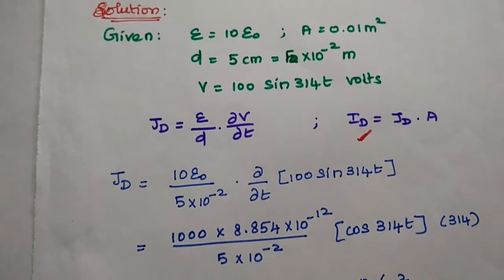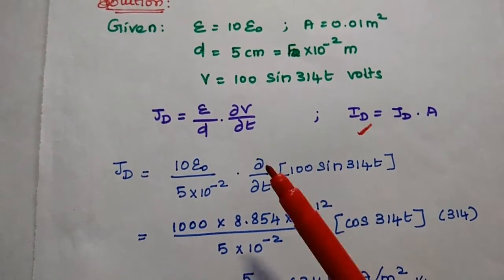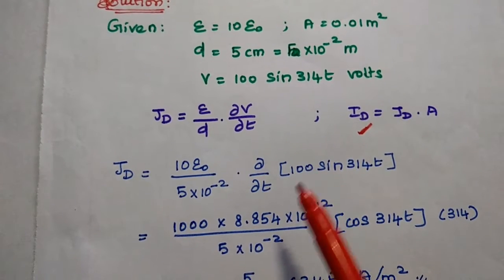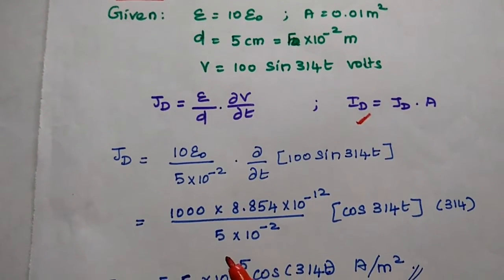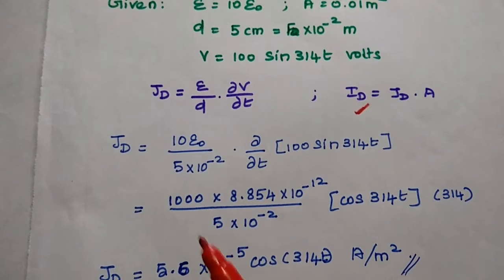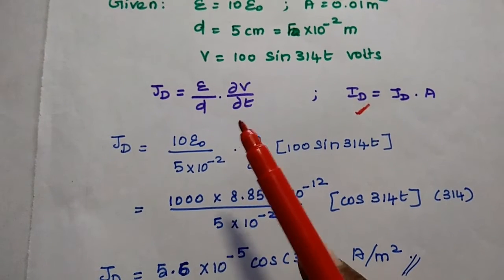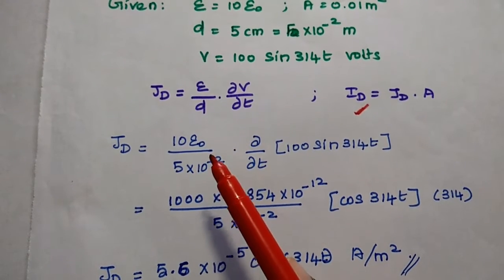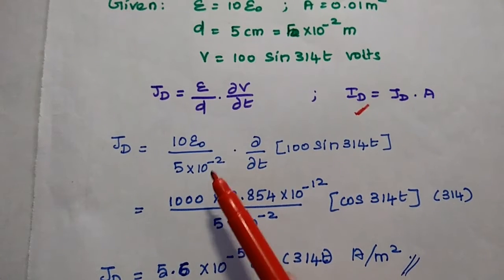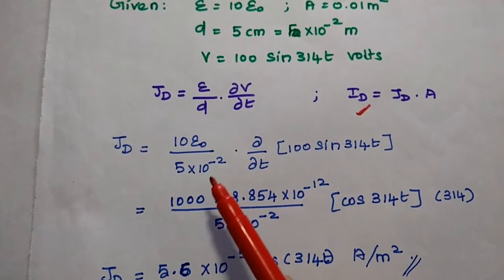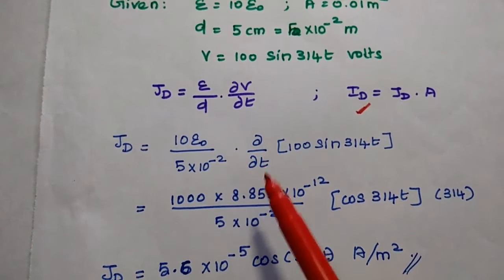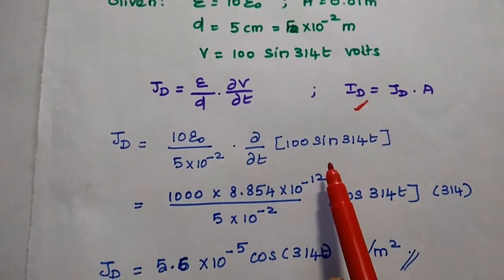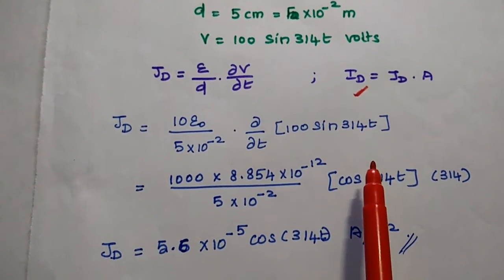First we are going to substitute the values of epsilon, D, and V in this formula to get the displacement current density. So Jd equals epsilon, which is 10 times epsilon naught, divided by D, which is 5 into 10 to the power minus 2, dou by dou T of 100 sin 314T.